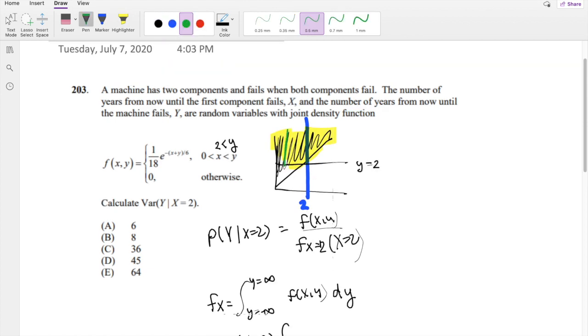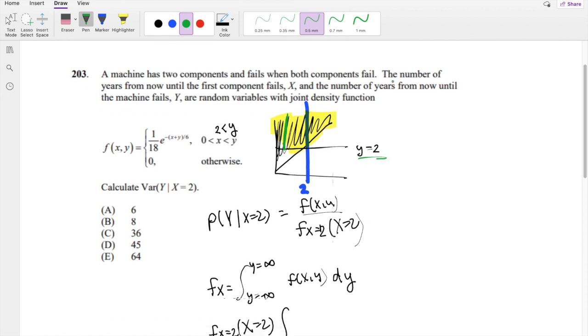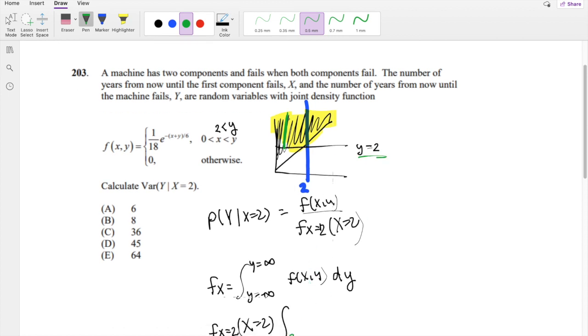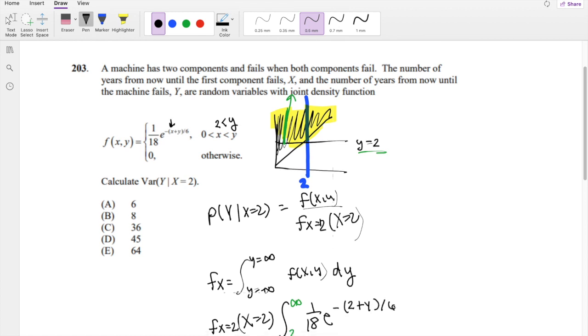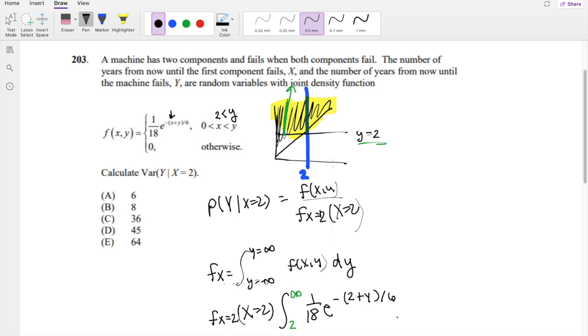Let's say this is y equals 2. They're saying area where y is greater than this 2 part, so that's this whole area above it. If we're integrating in terms of y, we're looking at this change. So the lower limit is that 2, and the higher limit just goes to infinity. We know that x equals 2, so we can plug in 2 for this x here: 1/18 e^(-(2+y)/6), and we're integrating this in terms of dy.